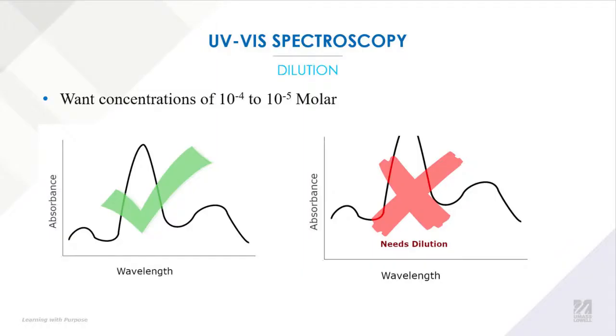The UV vis spectrometer is very sensitive to small concentrations, so be careful as undiluted samples with too high a concentration will have absorbance peaks that will go out of the scale of measurement.